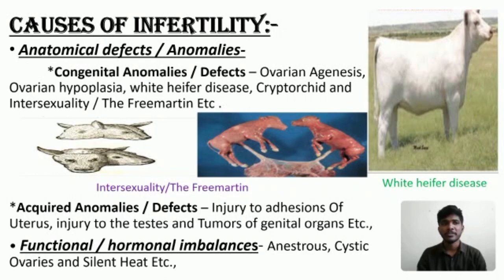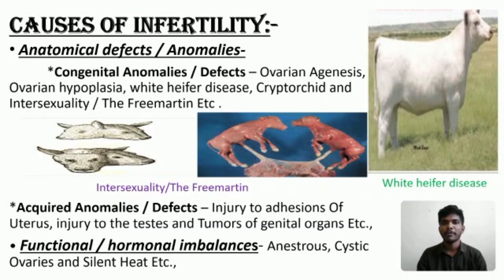Cryptorchidism means the condition in which the testis fails to descend from the abdomen into the scrotum. And intersexuality or freemartin — it means a female that is born as a twin with a male and becomes sterile, due to exposure to masculine hormones produced by the male in the uterus. Acquired defects include injury and adhesion of the uterus, injury to the testis, and tumors of the genital organs.